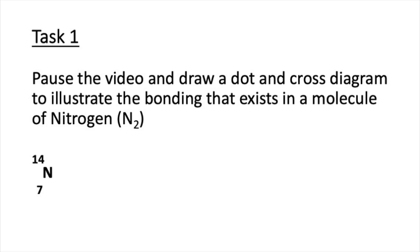Now it's your turn — please pause the video and attempt Task 1. For Task 1 we want you to draw a covalent bonding diagram for nitrogen, N2. Nitrogen is a molecule with atomic number 7 and mass number 14. It has seven electrons and an electron arrangement of 2,5.